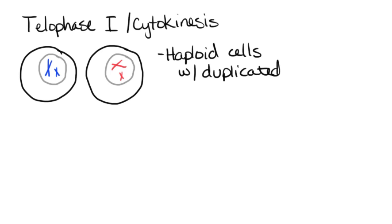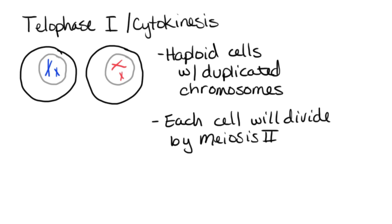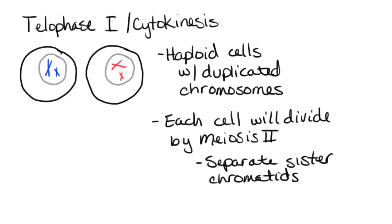Now what is going to happen is that each one of these cells is going to proceed through another cell division. Each cell will divide by meiosis II, which is the second half of the overall meiosis process. The overall goal of this stage is to ultimately separate the sister chromatids — and these are going to be non-identical sister chromatids, because of the crossing over which took place during meiosis I, and more specifically during prophase I.